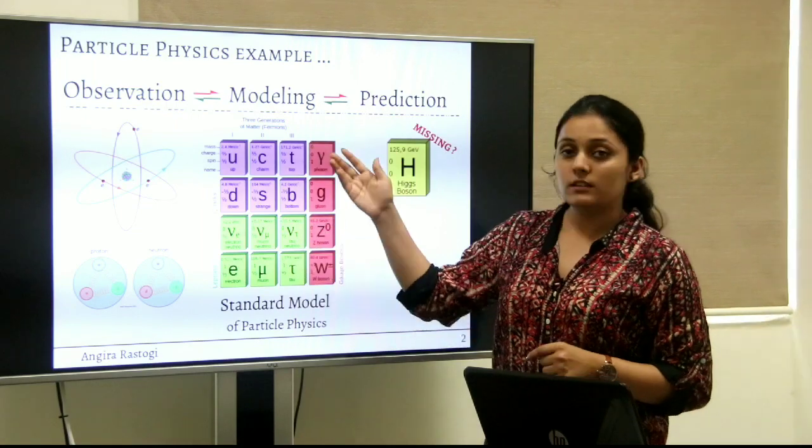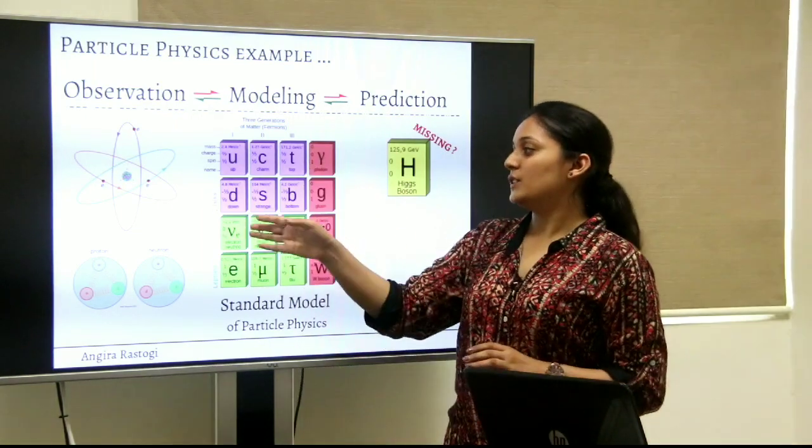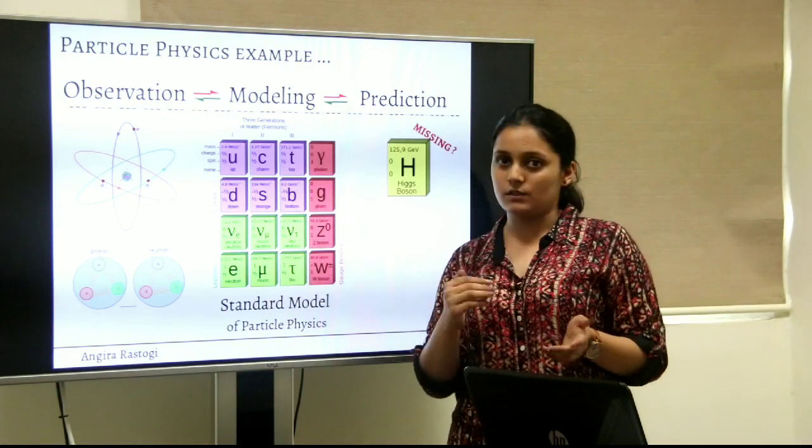So these quarks and leptons together constitute the whole matter that we see around us and they are further grouped into three different generations depending on their masses.